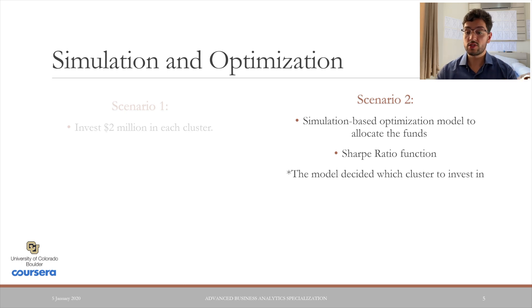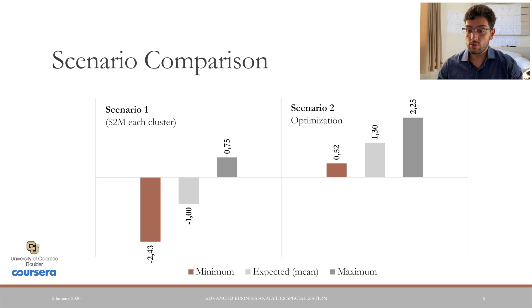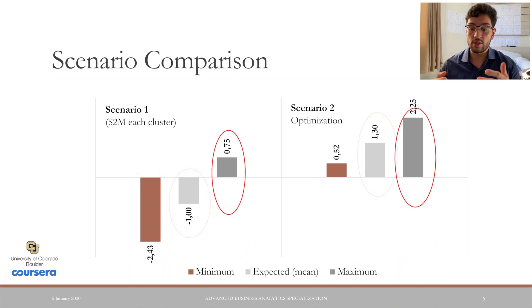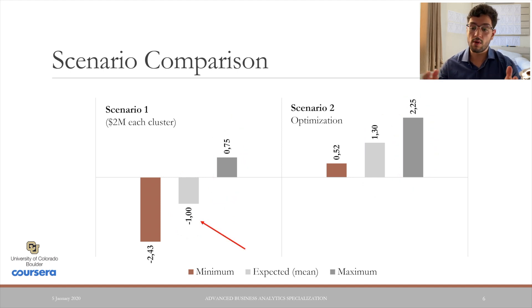After, it was reported the expected total return after one year, and the chance the return will exceed $0.5 million. The graphs show the minimum, the mean — which is the expected return — and the maximum values forecasted by the models. It is clear that scenario one, which allocates equal amounts of $2 million, led to horrible results. The expected return was minus $1 million.